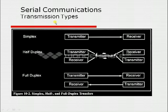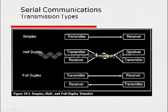The transmission types in serial communication are simplex, half duplex, and full duplex. In simplex, the transmitter and receiver are connected with a single unidirectional channel — the transmitter always transmits and the receiver always receives. In half duplex, one machine can transmit while the other receives; the channel is bidirectional but simultaneous transmission is not possible. In full duplex, there are two independent channels — one for transmission and one for receiving — enabling bidirectional and simultaneous communication.